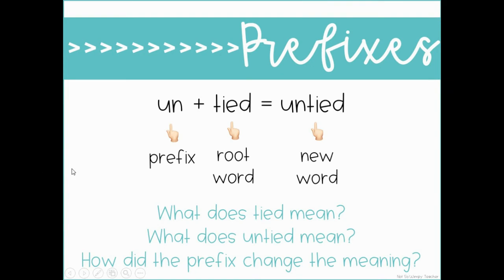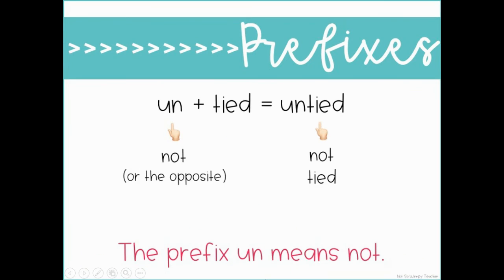We have the prefix un. When it's put with the root word tied, the new word is untied. What does the word tied mean? Something that is bound together. What does untied mean? Something that is unbound. It's not put together anymore. So how did it change? The prefix un means not. So we have dis and we have un. They both mean not or the opposite. Untied equals untied, which is the opposite of tied, not tied.